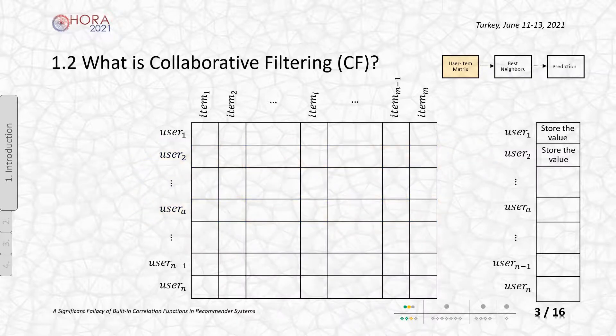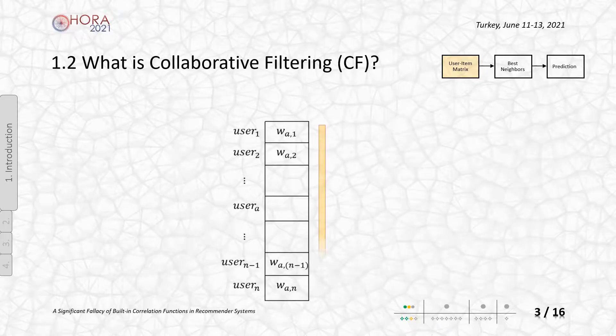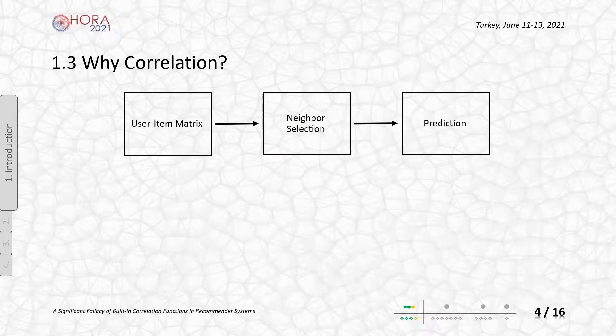And then, all user-user weights, in other words, linear relations, are computed. The best neighbors are found after sorting those weights. You can place those neighbors and corresponding weights in the prediction equation then.